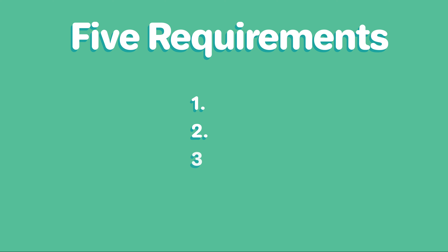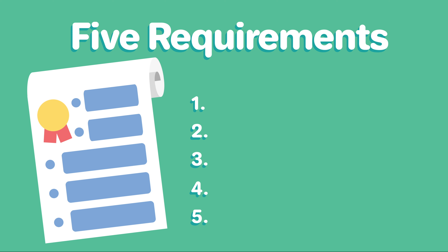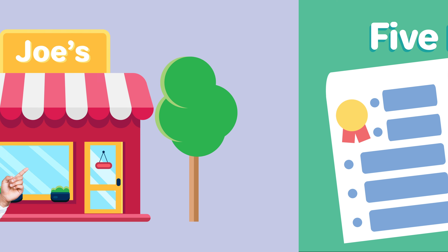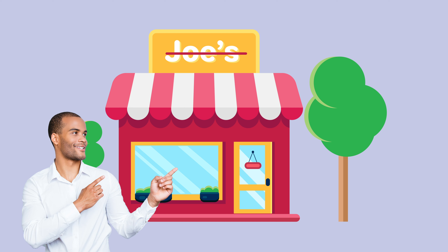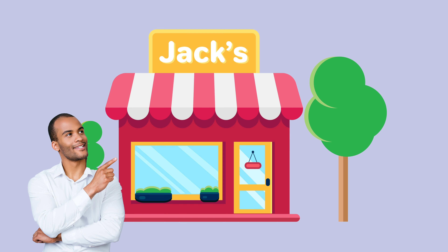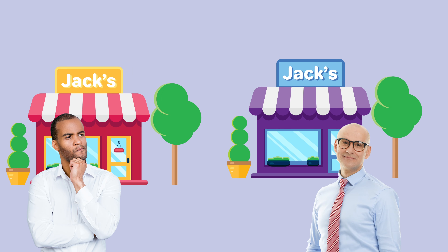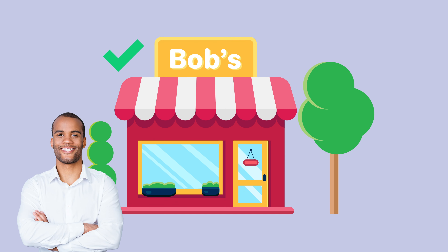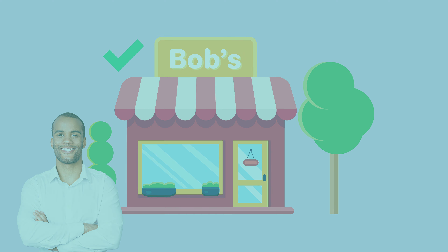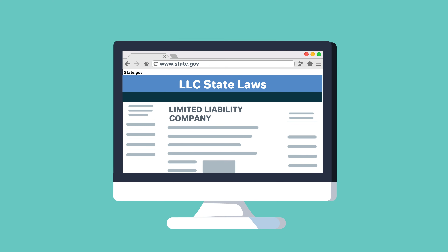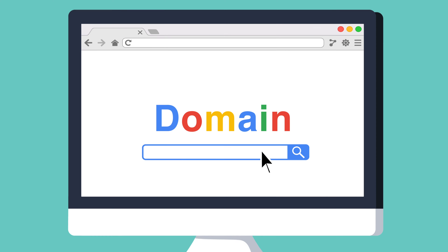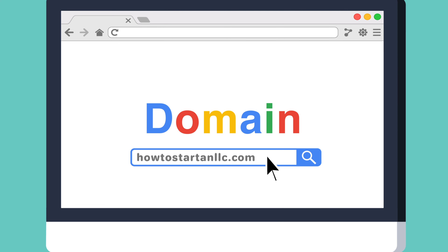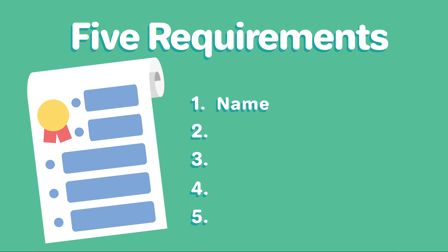Step one: name your LLC. You'll need to choose a company name that complies with Kentucky naming requirements and do a name search on the state of Kentucky website to make sure the name isn't already taken. You should also go ahead and register the URL for your business website and email.